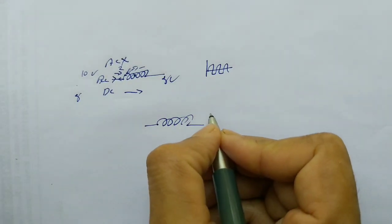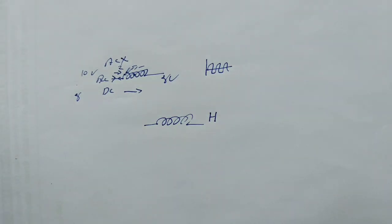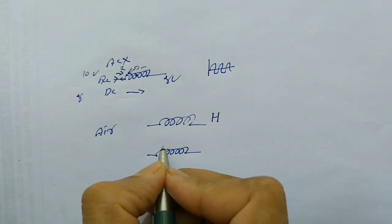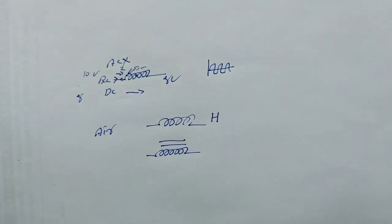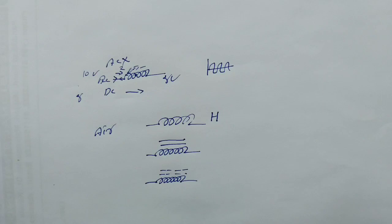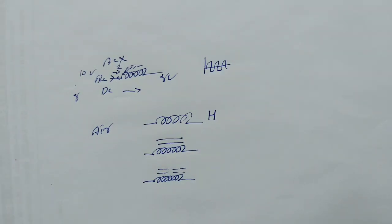Inductance is called Henry. That is the unit — Henry, with the letter H. There are three types of inductors: air core inductance, iron core inductance, and ferrite core inductance. The air core has its own symbol, the iron core has a symbol with dotted lines, and the ferrite core inductor also has a dotted line symbol.